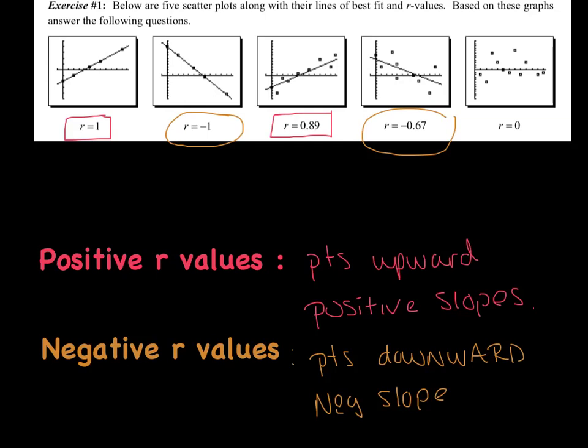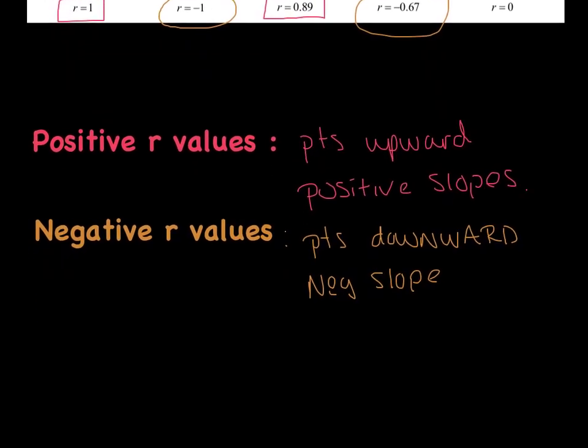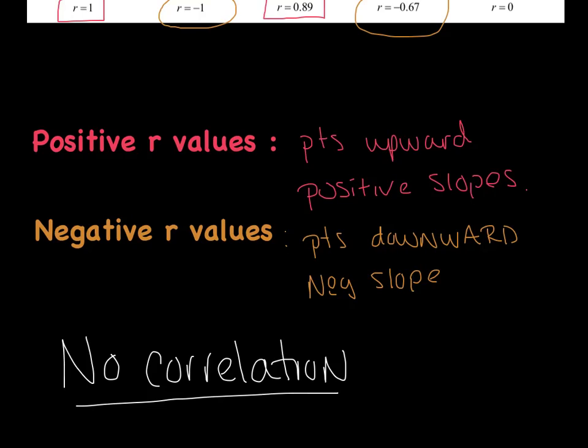Now, there is this last guy. Notice it's not positive or negative. Zero is not a positive number or a negative number. Zero is a very unique number. And notice, could I even draw a line? Basically I couldn't. I had no idea if these points were going up. It wasn't very obvious. Or if these points were going down. Here, I clearly knew they were moving upwards. Here, I clearly knew they were moving downwards. But in this case, I have no idea. And that's called a zero correlation or no correlation. Okay? No correlation if I can't tell the direction that the points are going in.